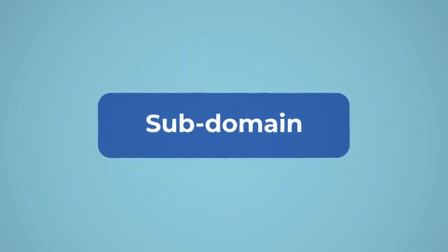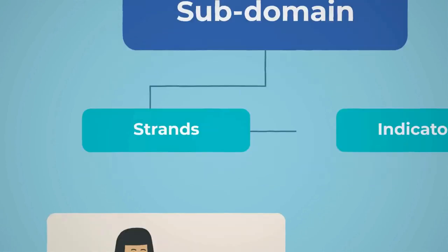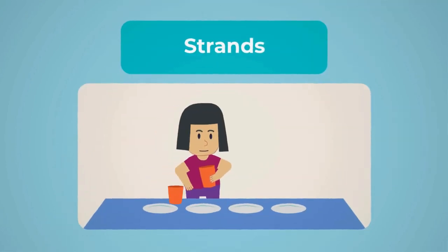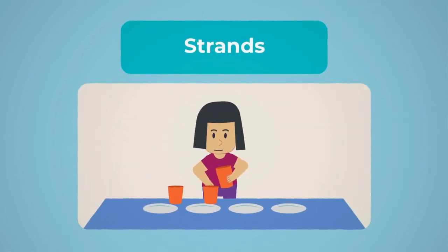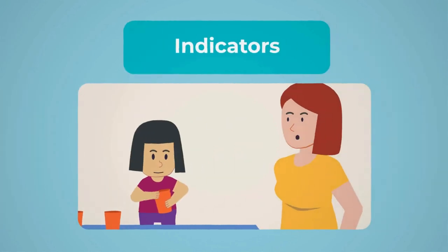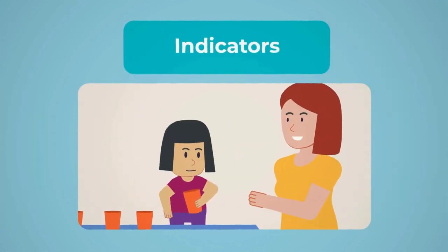Within each subdomain, there are strands and indicators. Strands describe the capabilities that change as children learn and develop, and indicators describe the progress you may observe.